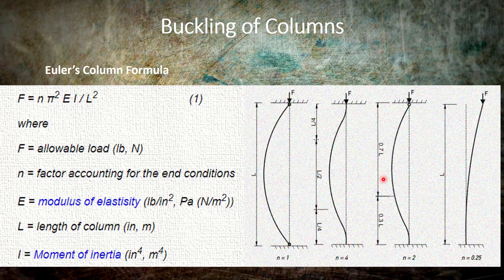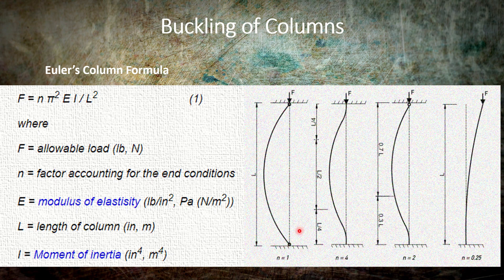The critical buckling load is found by Euler's column formula. In this formula, n is a factor accounting for end conditions, E is modulus of elasticity, I is moment of inertia, and L is length of the beam. The figure shows different end conditions. In the first case, there are roller supports on both ends, and for this case n equals 1.